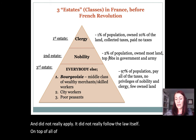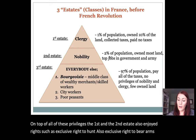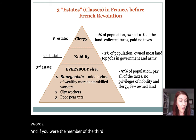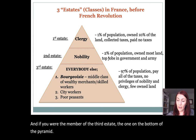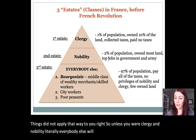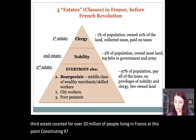All of these privileges — the best land, most fertile land, top government and army positions, exclusive right to hunt, and exclusive right to bear arms and swords — belonged to the top 3% of the population collectively. Meanwhile, unless you were clergy or nobility, literally everybody else was a member of the Third Estate, which counted for over 20 million people living in France at this point, constituting 97% of the entire population.